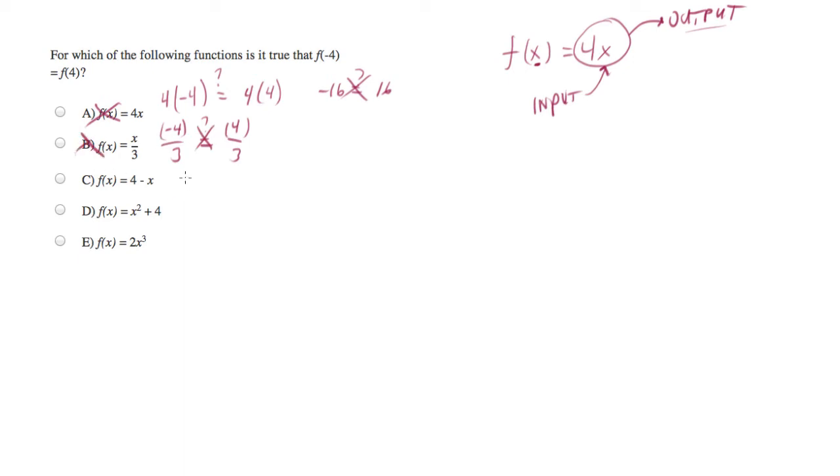How about 4 minus x? 4 minus negative 4. Is that equal to 4 minus 4? This one side is 0. The other side, I'm writing it backwards. One side is 8, and the other side is 0. So that's not true. So C is out.